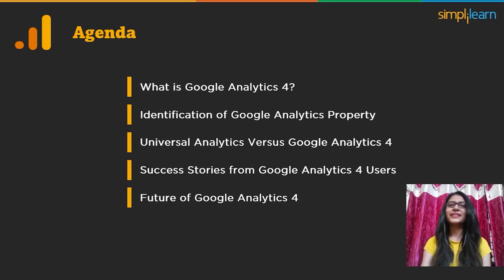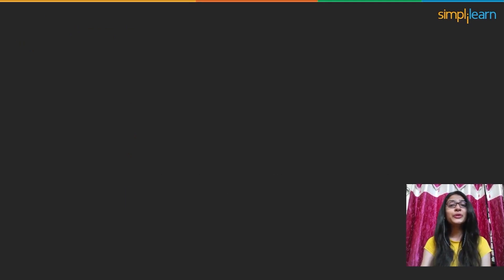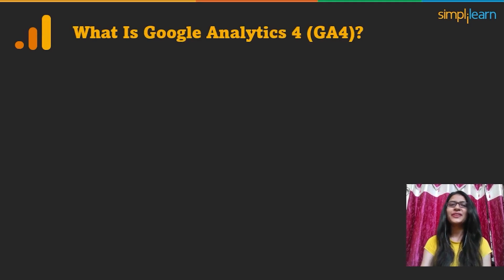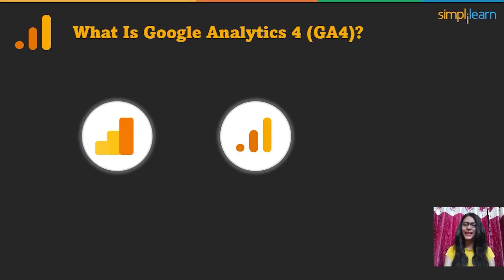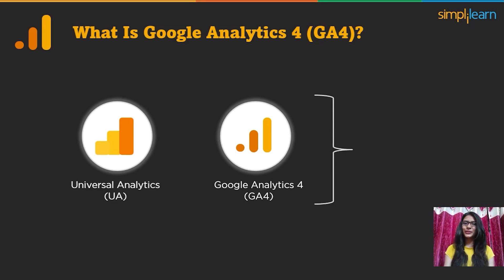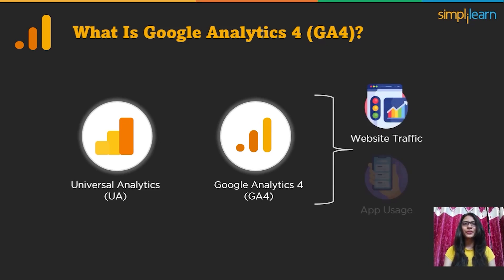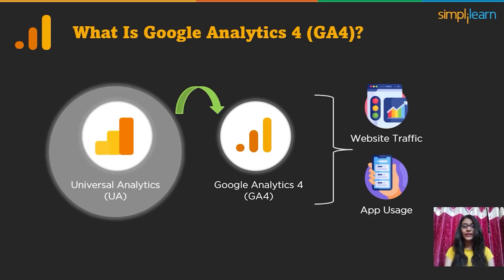Allow me to introduce the next generation of Google Analytics — Google Analytics 4, also known as GA4. Initially, Google Analytics 4 was known as App plus Web. GA4 is the latest analytics property with several advantages over the old Google Analytics, also known as Universal Analytics. Google Analytics 4 can measure and keep track of both website traffic and app usage, making it a one-stop solution for all your analytics needs. If you are still using Universal Analytics, we recommend getting familiar with Google Analytics 4 as it is the new future of analytics.